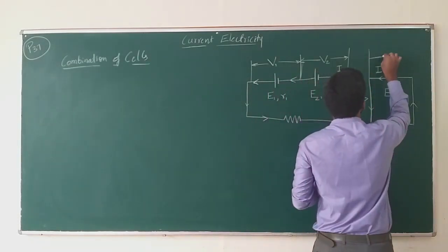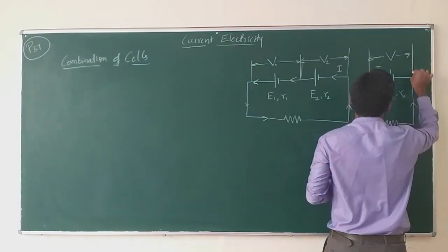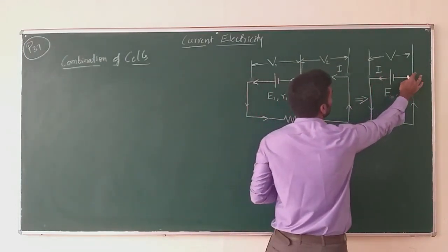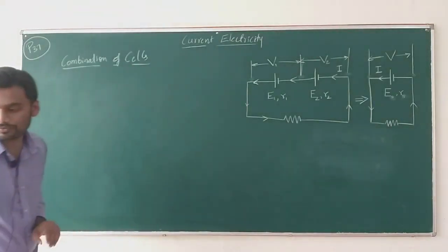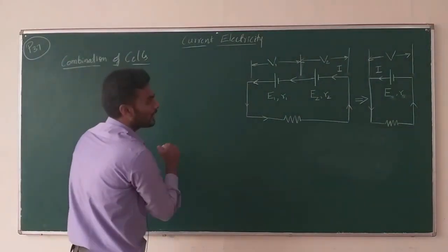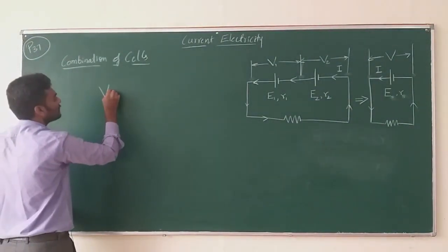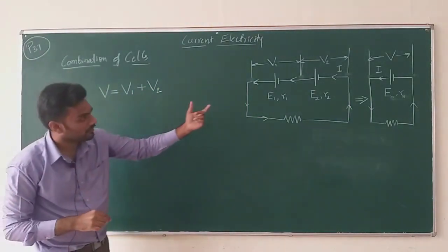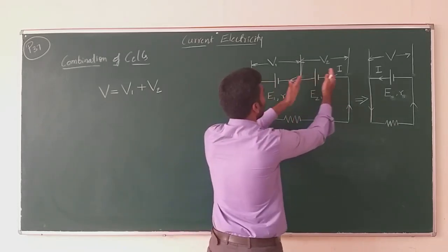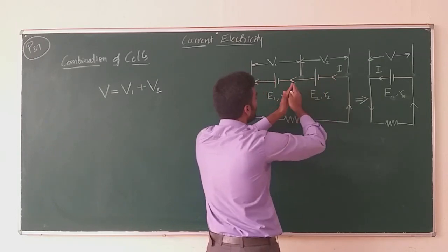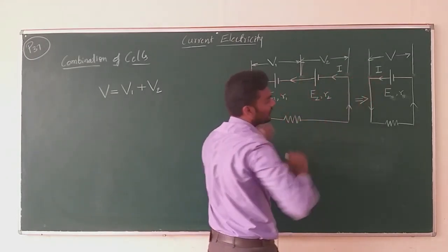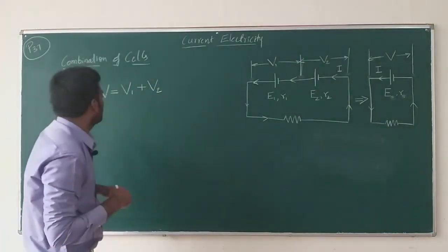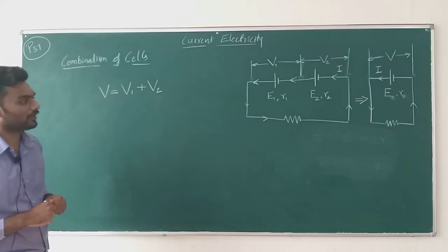Let V be the potential difference across the effective cell. By comparing the circuits, I can say that V equals V1 plus V2, because the potential difference between the two outer points is the sum of the two individual potential differences — the same reasoning we used with the combination of resistors.